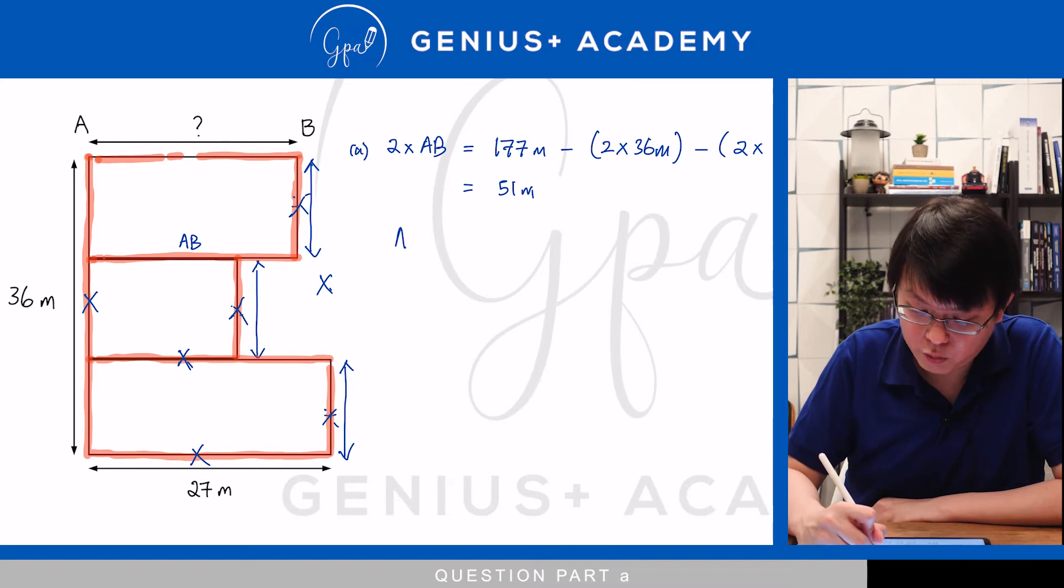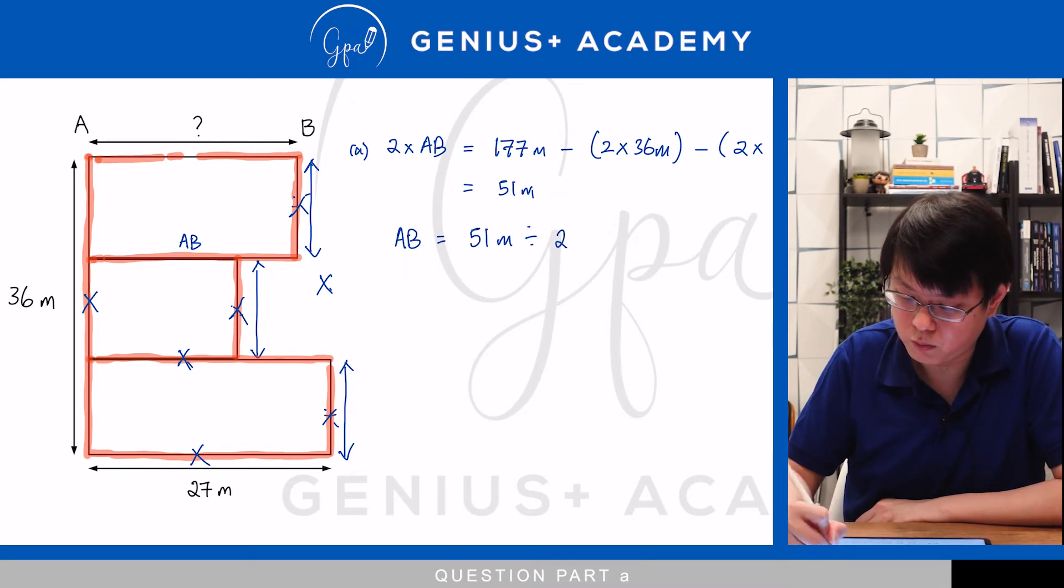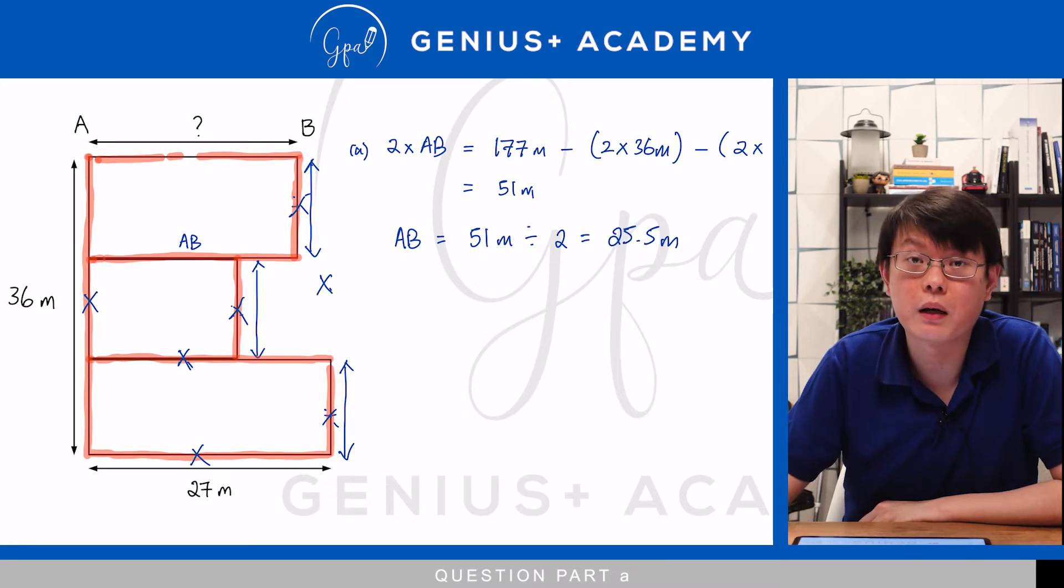And therefore, to find AB, 51 metres divided by 2. And that will give us 25.5 metres for part A of the question.